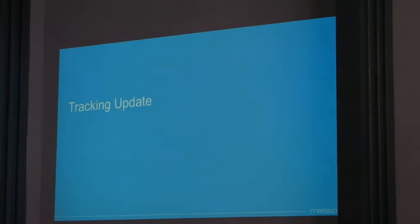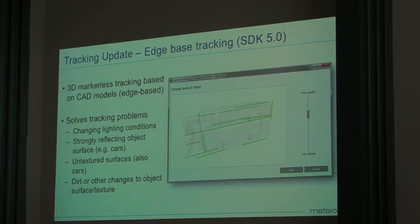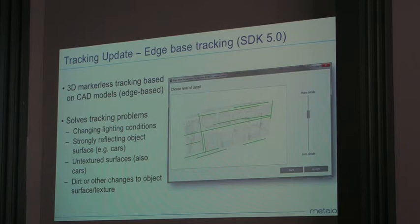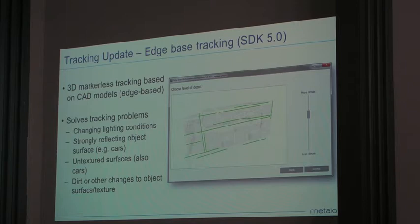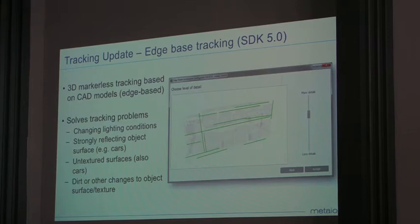I should tell you about tracking and what we did recently in the SDK. For example, one thing we did last year in SDK 5.0 and 5.5 was we added 3D markers for tracking. We use CAD models to initialize tracking — that's why we call it edge-based, because we use the edges around the model. It has the advantage of solving multiple tracking problems, for example, changing lighting conditions. We face this problem mainly in the car industry, where the car surface is usually very reflective and also very untextured. With edge-based tracking you get around this, and it's very stable now.